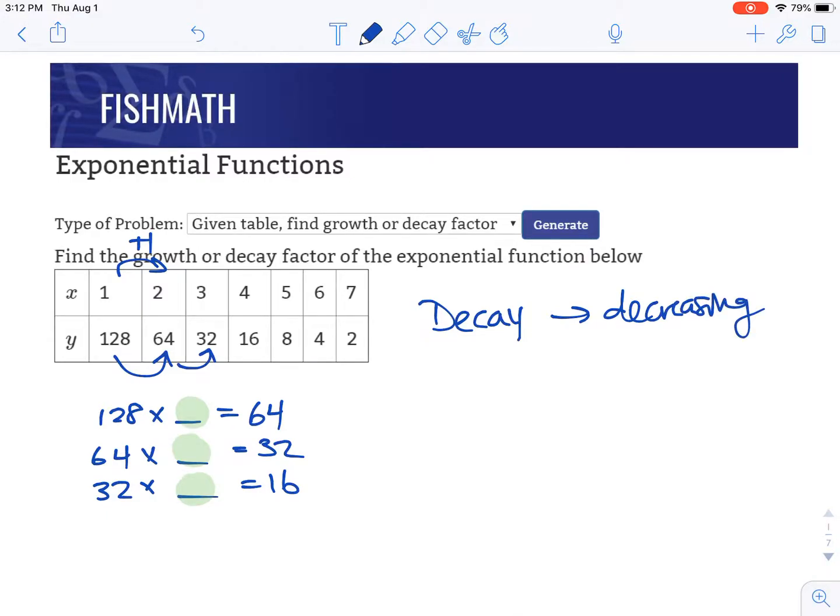So to figure this out, we're going to use division to go backwards here and figure out the constant amount we're multiplying by. So we're going to take 64 and divide it by 128, and that will give us the amount you'd be multiplying by every single time. And that's just 0.5 or one half.